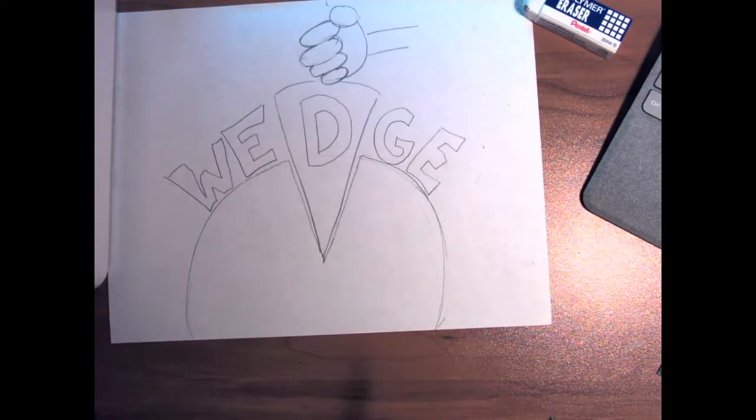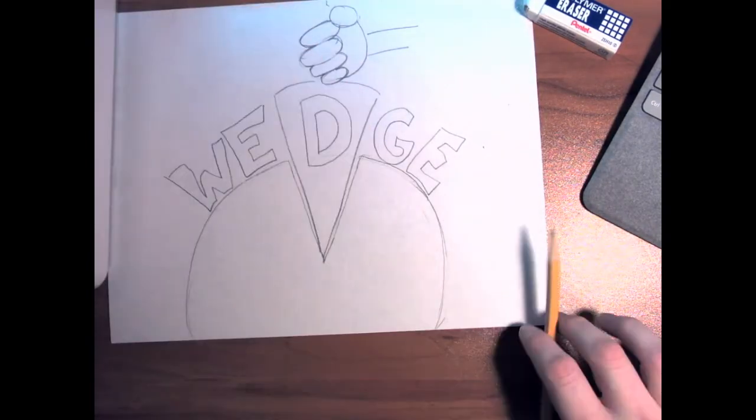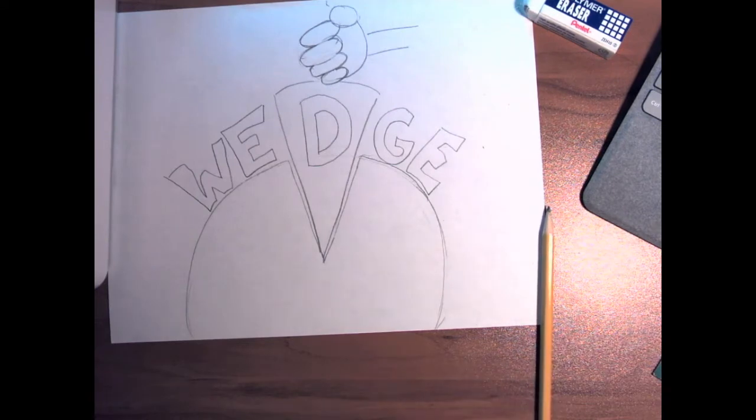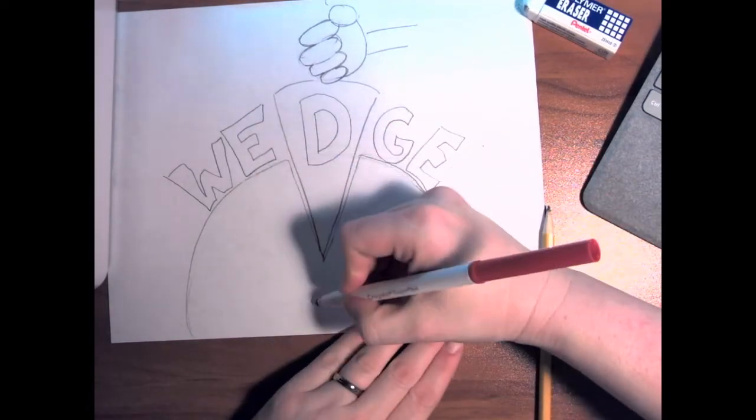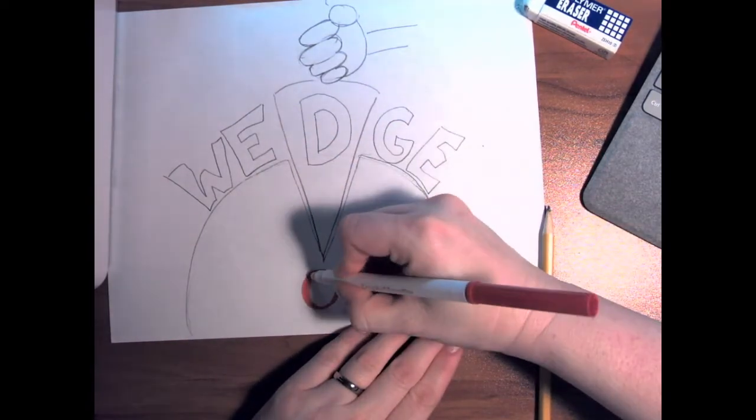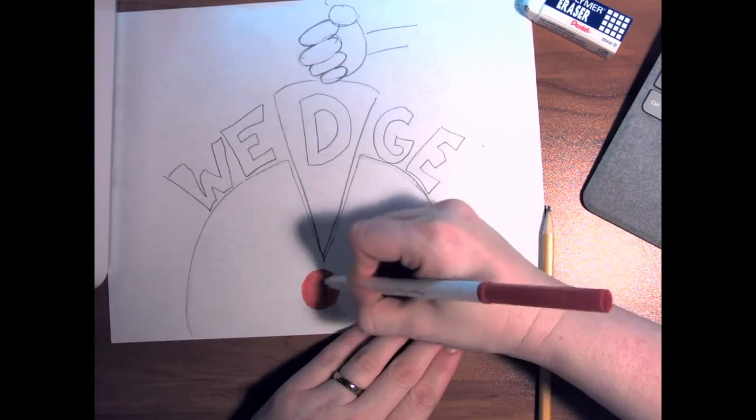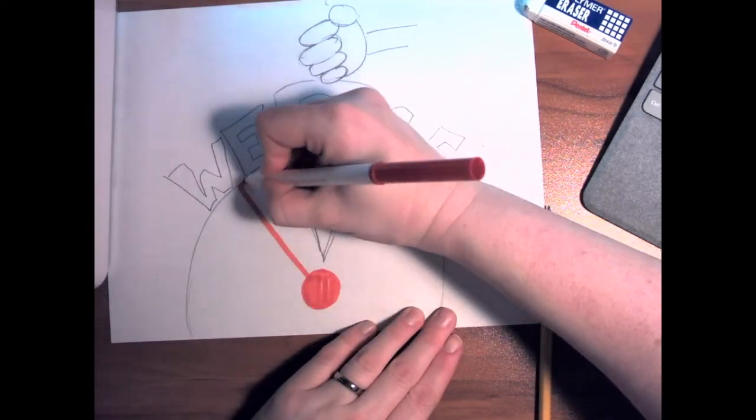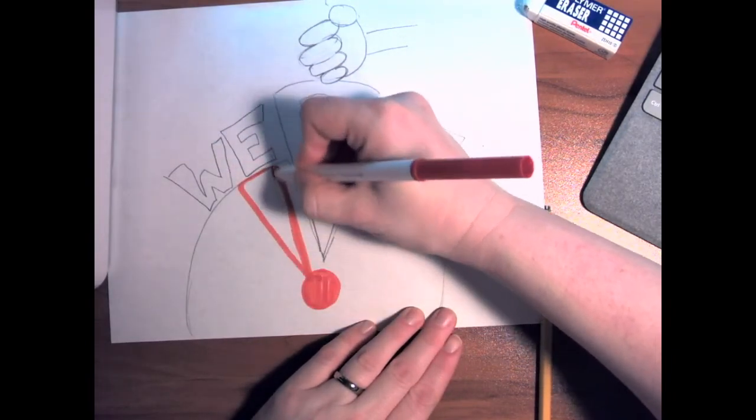And I can put... There we go. Alright. So, I've got my wedge. Now, what is it that I am going to be working on? I am going to make it look like it is wedging a giant peppermint candy.